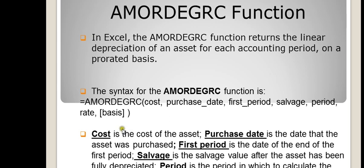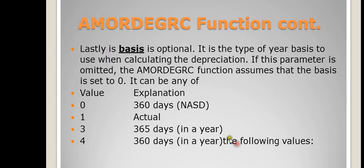Cost is the cost of the asset. Purchase date is the date that the asset was purchased on. First period is the date of the end of the first period. Salvage is the salvage value after the asset has been fully depreciated. Period is the period in which to calculate the linear depreciation. Rate is the rate of depreciation that you're using. And lastly is basis, which is optional.